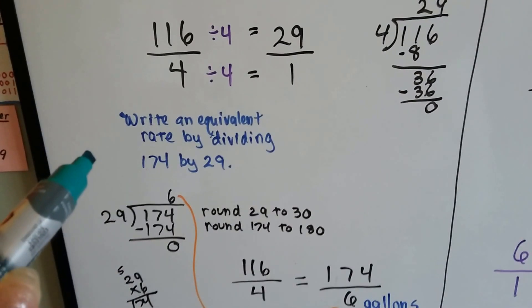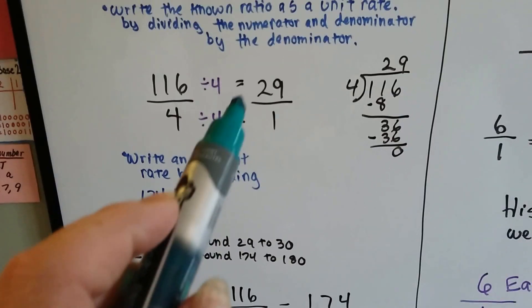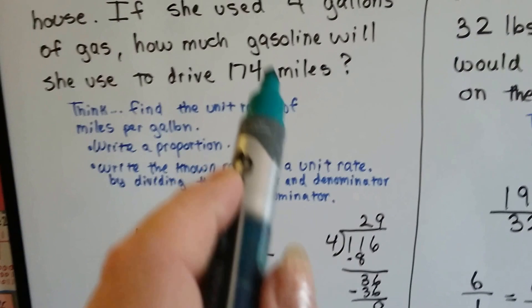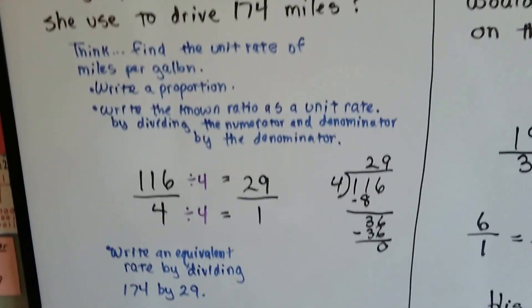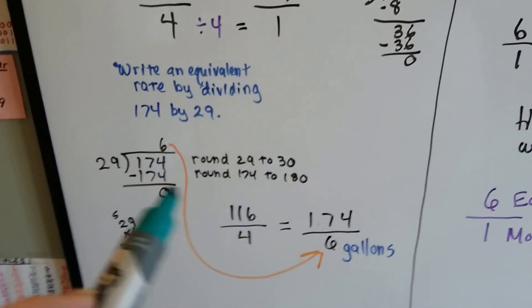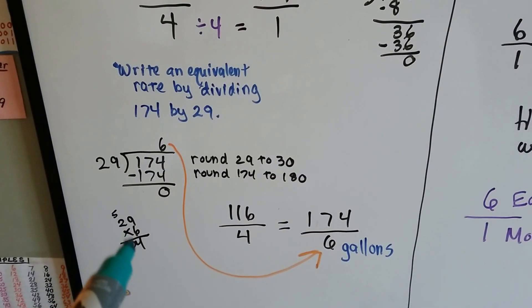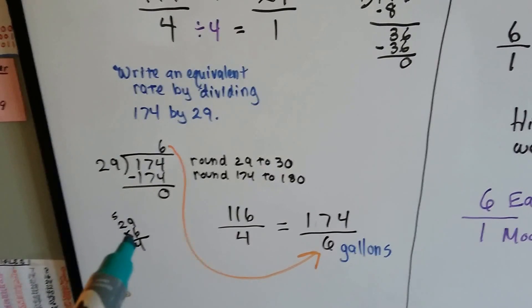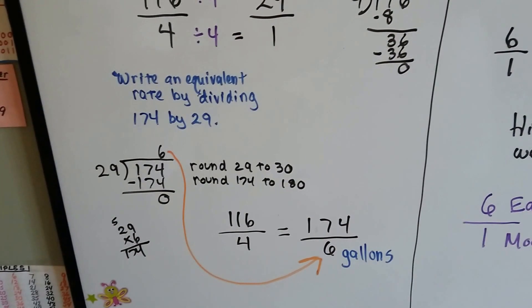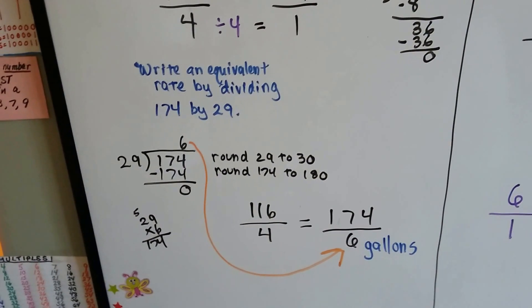Now we write an equivalent rate by dividing 174 by 29. If she gets 29 miles to the gallon, how many 29s fit into 174? So we do our math. We round the 29 to 30 and the 174 to 180. Do a little math on the side when we come up with 6 to make sure, and it is 174. So we know she's going to use 6 gallons to drive the 174 miles, and that's our proportion.